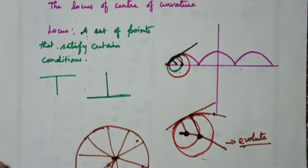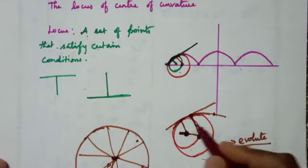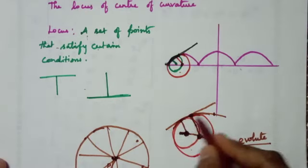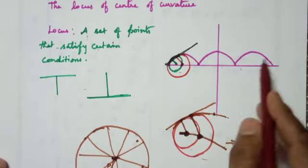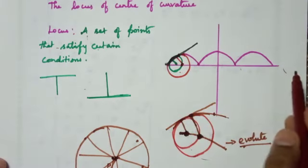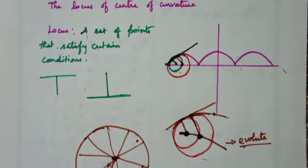Now I'm going to find the evolute for a given curve. The resulting orange curve will be similar in shape but different — for example, the evolute of a parabola or ellipse will be a distinct curve. That resulting curve is known as the evolute of the original curve. Thank you.